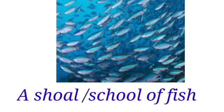Now listen to this image. What is this? Fish. How many fishes are there? A lot of fish — they are in a group. What is the group name for fish? Shoal or school. Shoal or school — shoal and school are the group names for fish.